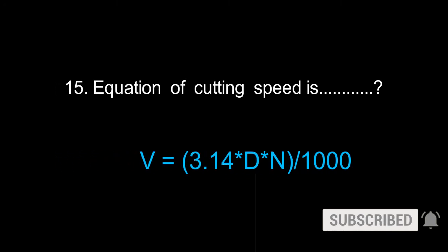Equation of cutting speed is V = πDN/1000, where π is 3.14, D is diameter of the drill, and N is RPM.